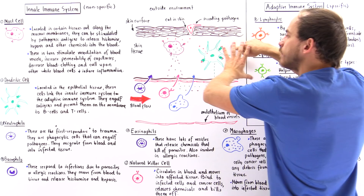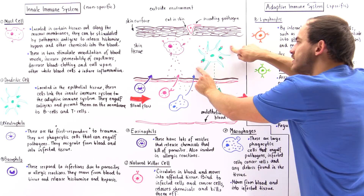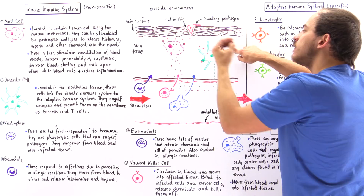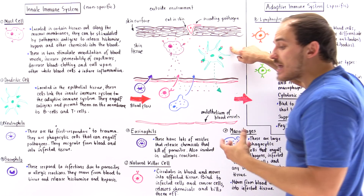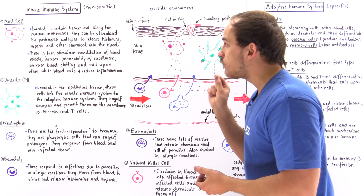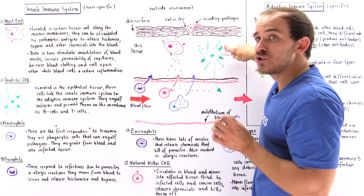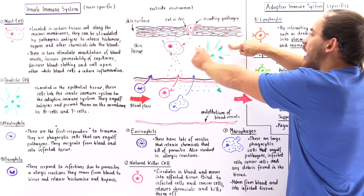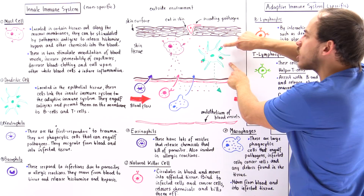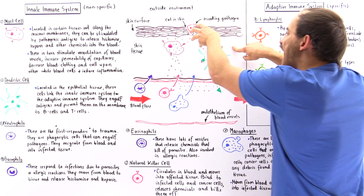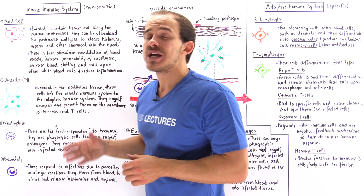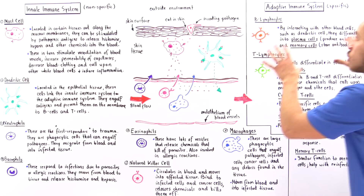Now let's move on to the other cell found within the tissue — the dendritic cell. Dendritic cells are capable of taking these antigens by engulfing them into the cell. Inside the cell, they digest or break down those antigens into smaller pieces, taking a small portion known as an epitope and placing it on a special membrane protein called the major histocompatibility complex. Once these antigens are on the membrane protein, the dendritic cell exits the tissue, enters the blood system, and moves to the lymph nodes. This is the cell that calls upon our adaptive immune system.